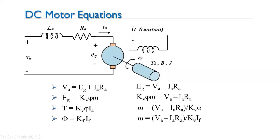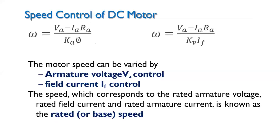Since φ is proportional to IF, speed ω is proportional to (VA − IaRa) / IF. Since Ra is very small, the IaRa drop can be neglected, so speed is directly proportional to VA (armature voltage) and inversely proportional to IF (field current). These are the two methods we want to implement for speed control.